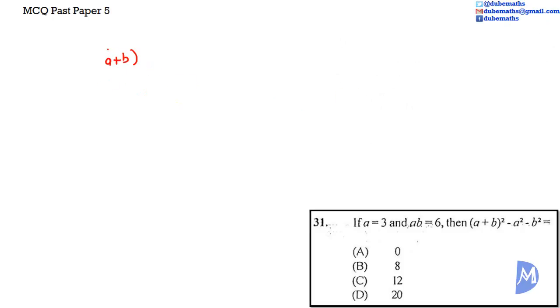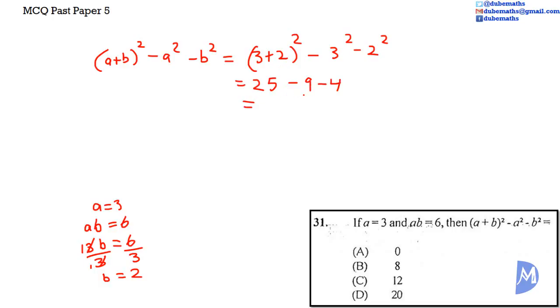A plus B squared minus A squared minus B squared. We don't know the value of B. We are given A is equal to 3 and AB is equal to 6. Substituting A is equal to 3 and AB is equal to 6, we get 3B is equal to 6. Dividing by 3, we get B is equal to 2. Substituting A is equal to 3 and B is equal to 2 gives 3 plus 2 squared minus 3 squared minus 2 squared. 3 plus 2 is 5. 5 squared is 25. 25 minus 9 minus 4. 25 minus 9 is 16. 16 minus 4 is equal to 12. The answer is C.